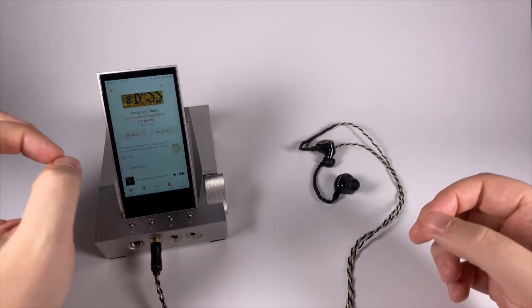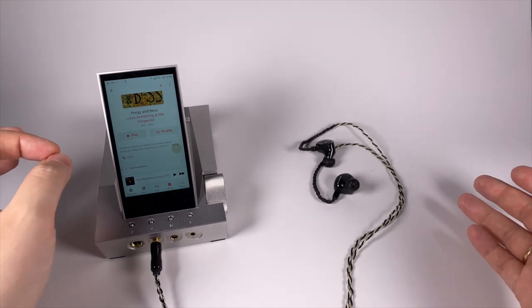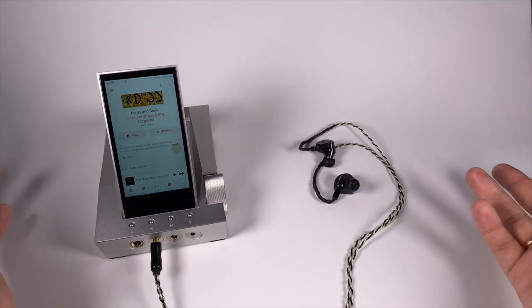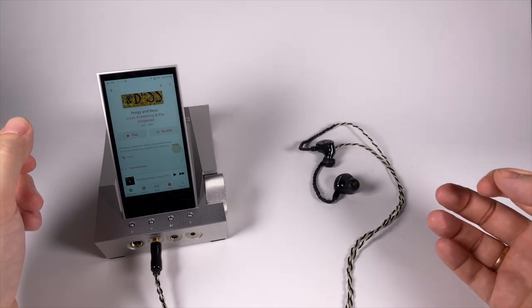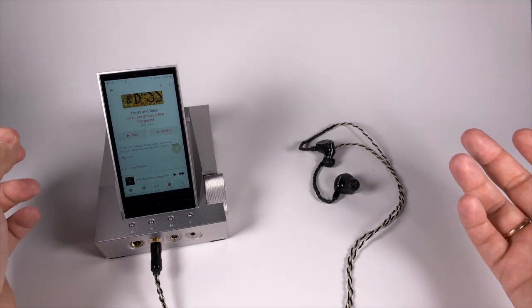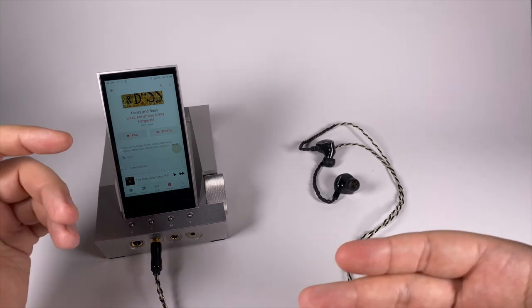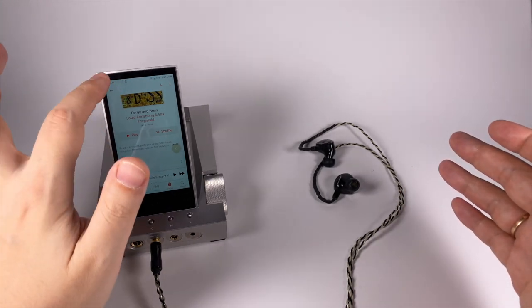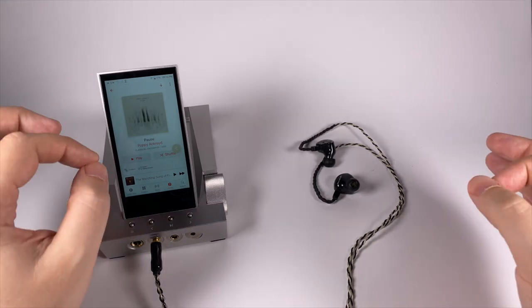First example is Porgy and Bess by Louis Armstrong and Ella Fitzgerald. A lot of musicians did cover versions for this track, probably it's somewhere in top 10 of most covered songs ever. But Louis Armstrong and Ella Fitzgerald is just one of the best, or even the best. It's a good record with a lot of treble. It was recorded in 1957 if I remember right, but still record quality is pretty decent and they preserved treble. Because of that, listening with this player gives you a lot of nuances and really pleasant experience of diving into music.